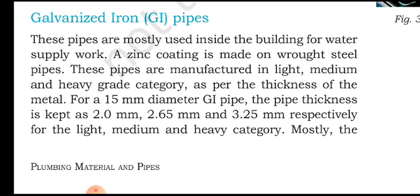So let's begin today's topic. These pipes are mostly used inside buildings for water supply work. They are especially used in residential buildings. A zinc coating is made on raw steel pipes, and because of this zinc coating, we call them GI pipes, or galvanized iron pipes.